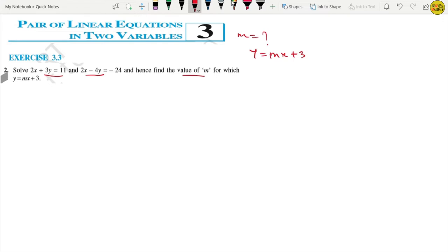Now, what do we have to do in the question? We need to find m. There is m here, so we have to find m from here. And here we have to put the value of y and x. We will put the value of y and x, then we will get a single variable which is m.